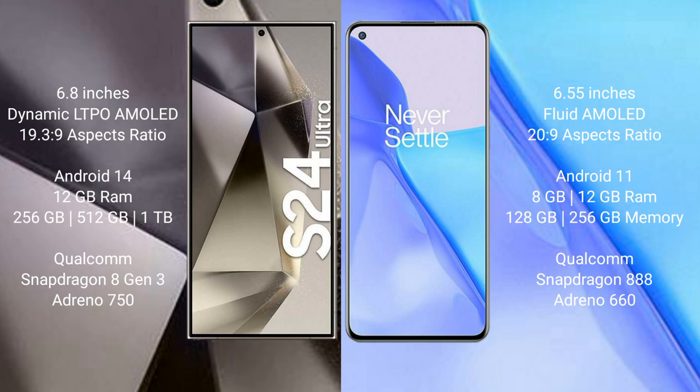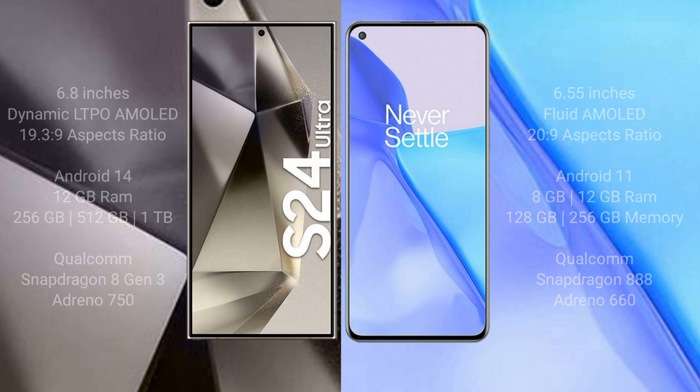The Samsung Galaxy S24 Ultra features a Qualcomm Snapdragon 8 Gen 3 processor with Adreno 750 GPU. OnePlus 9 comes with 8GB or 12GB RAM and 128GB or 256GB internal storage, with a Qualcomm Snapdragon 888 processor and Adreno 660 GPU.